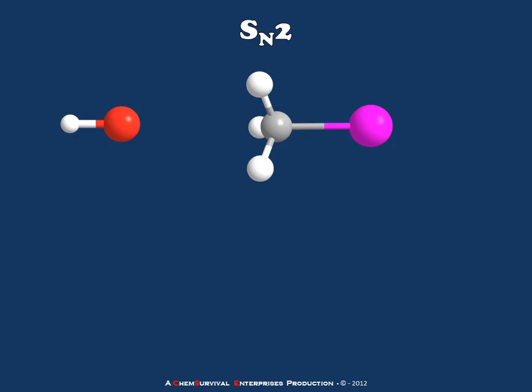Now let's move on to the SN2 reaction mechanism. In this case, a few things have been changed. First, the nucleophile has been altered to a hydroxide ion, which is a much better nucleophile than, for example, a halide ion. The other important change is switching from a t-butyl halide to a methyl halide as the substrate. This is because, in order to proceed through an SN1 mechanism, a methyl halide would have to form a methyl cation, which is a very unstable intermediate. So this substrate is much more likely to hold on to its leaving group until it is attacked by the nucleophile.